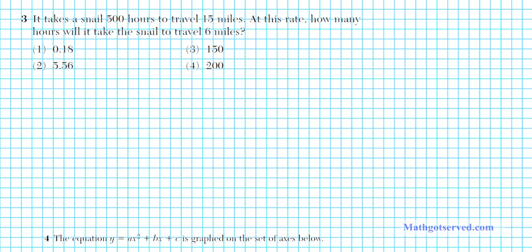Let's take a look at number three. It takes a snail 500 hours to travel 15 miles. At this rate, how many hours will it take to travel six miles? We can use the distance equals rate times time formula, or we can solve using proportions. The quickest way is using proportions. A proportion involves stating that two fractions are the same.